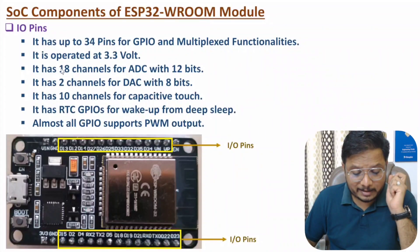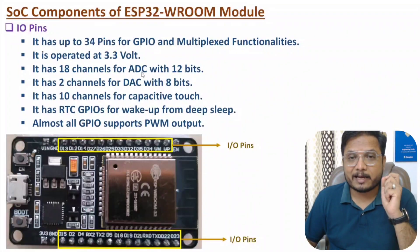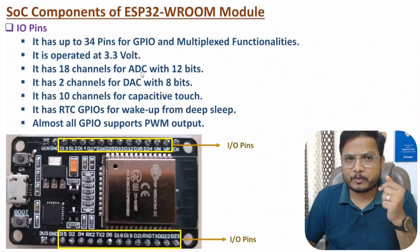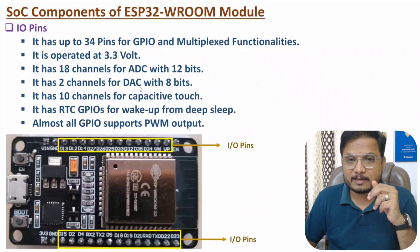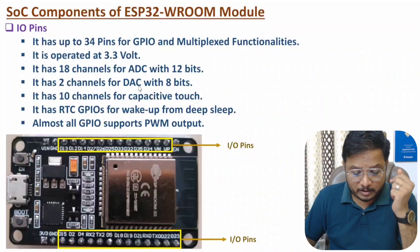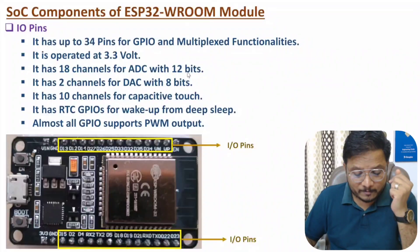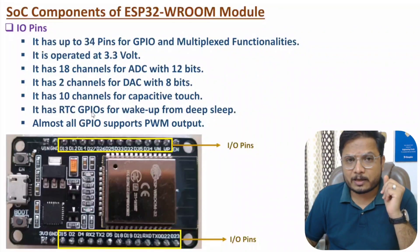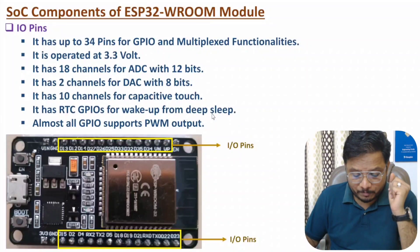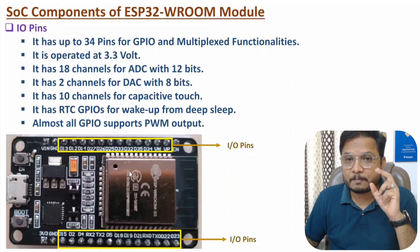It has 18 channels for ADC — ADC means analog to digital converter — with 12 bits. We have two channels for DAC — DAC means digital to analog converter — with 8 bits. Here we have 10 channels for capacitive touch, as well as RTC GPIOs. RTC GPIOs are used to wake up the processor from deep sleep mode, which is used to save power in IoT applications where the module runs on a battery.